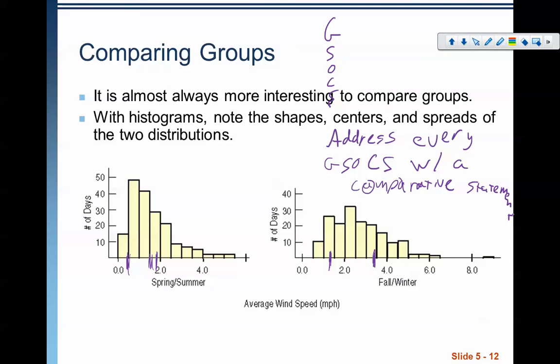When we're comparing groups, we need to make sure that we're drawing comparative statements for each of the GSOCs. It's going to be a fairly large paragraph that you're writing when you're comparing groups. And I will say that on the AP exam, you will almost be guaranteed to have to do some kind of question in your free response where you're either writing about a distribution itself or comparing two distributions.